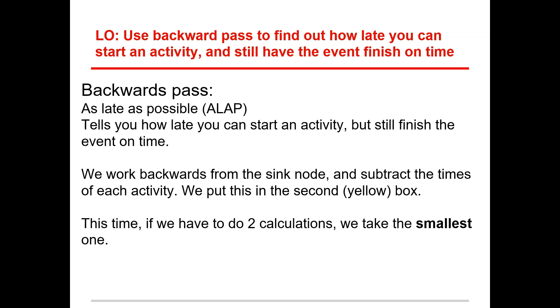So let's go ahead and do that to our one. This time though, if we have two calculations, we need to take the smallest one. So if we've got a node that has two different paths coming to it or two different activities coming to it, we need to take the smallest one. And we should get back to zero when we get back. Otherwise we know we've probably made a mistake somewhere.